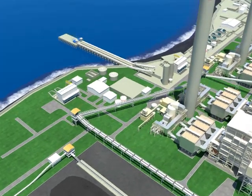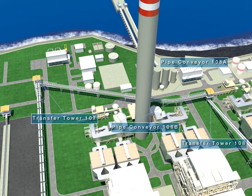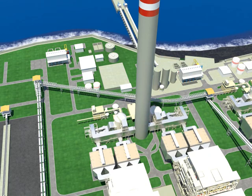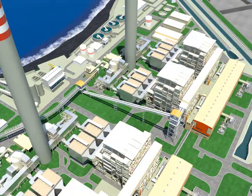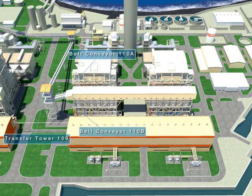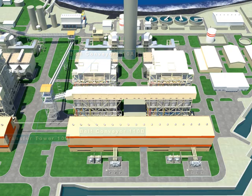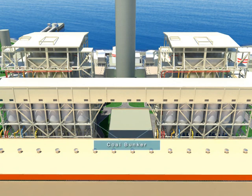The coal which goes through Belt Conveyor 107A and 107B is sent to Transfer Tower 108 by Pipe Conveyor 108A or 108B through Transfer Tower 107, and to Transfer Tower 109 through Belt Conveyor 109A or 109B. Finally, the coal is loaded to the Coal Bunker by using Tripper 110A or 110B through Belt Conveyor 110A or 110B through the Diverted Gate at Transfer Tower 109.